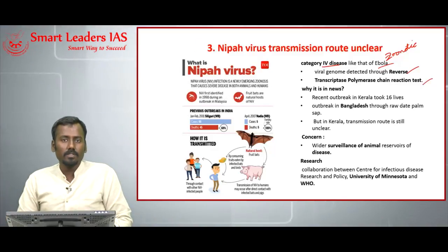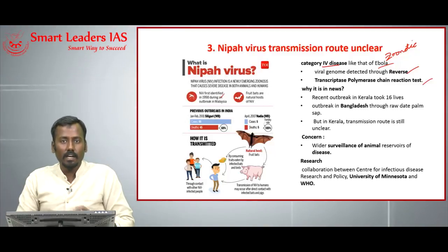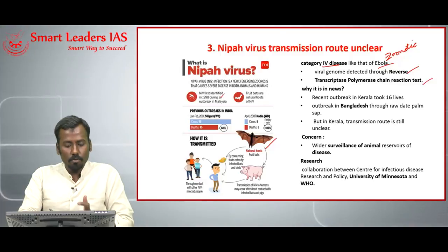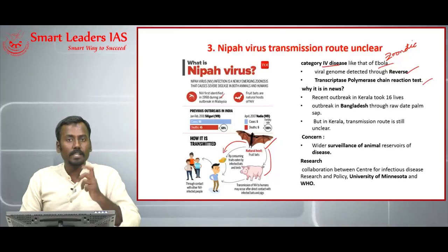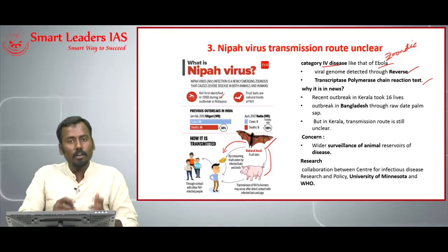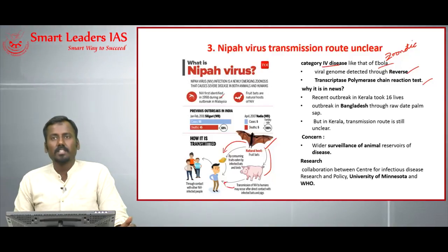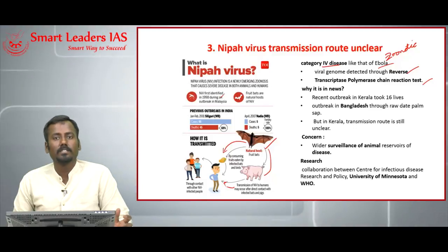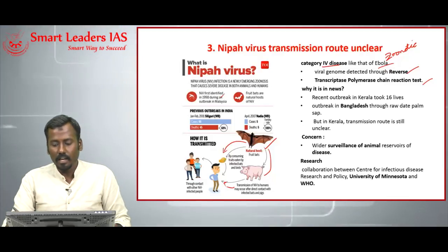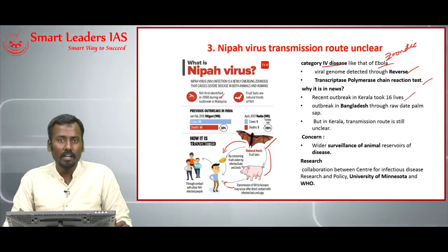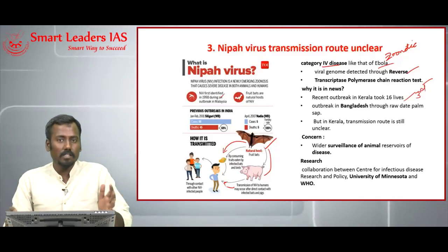Nipah virus was first found in Malaysia in 1998. Any viral disease needs a vector; the primary vector is the fruit bat. From the fruit bat, the virus goes to pigs or to fruits bitten by fruit bats, and the virus is then transmitted to humans either through those fruits or through pigs. ICMR has found that the fruit bat was the source of the Nipah outbreak in India. The recent outbreak in Kerala took 16 lives, and this was not the first outbreak in India — it is the third.